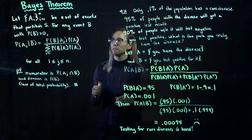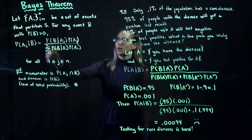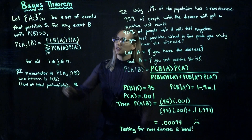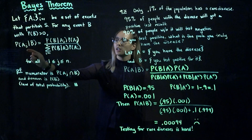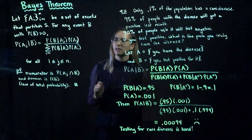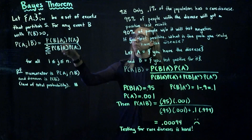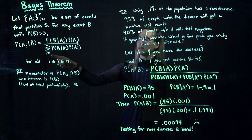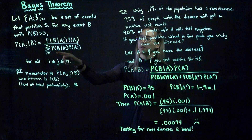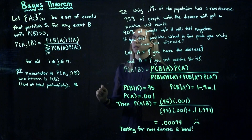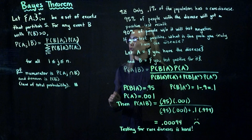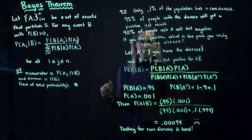So if we have any event B defined on our sample space, where the probability of B is positive, then we can calculate the probability of Aj given B, which equals the probability of B given Aj times the probability of Aj, divided by the sum from i equals 1 to N of the probability of B given Ai times the probability of Ai. This is true for any J from 1 to N.